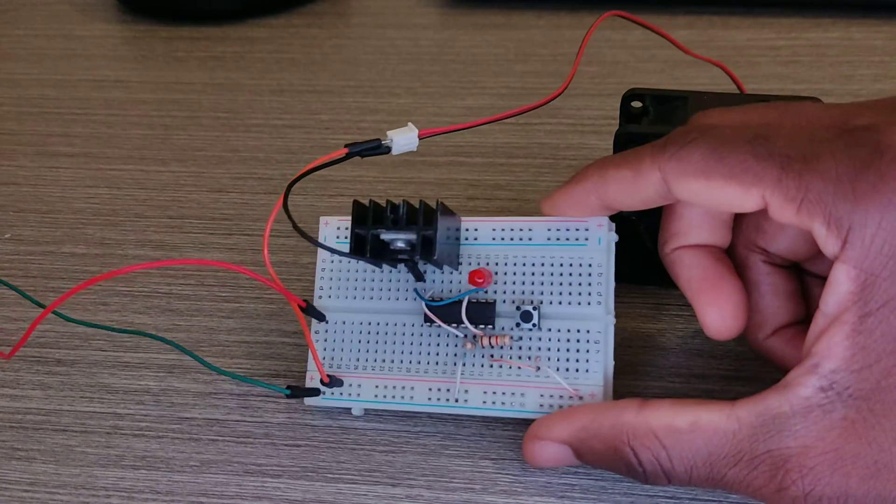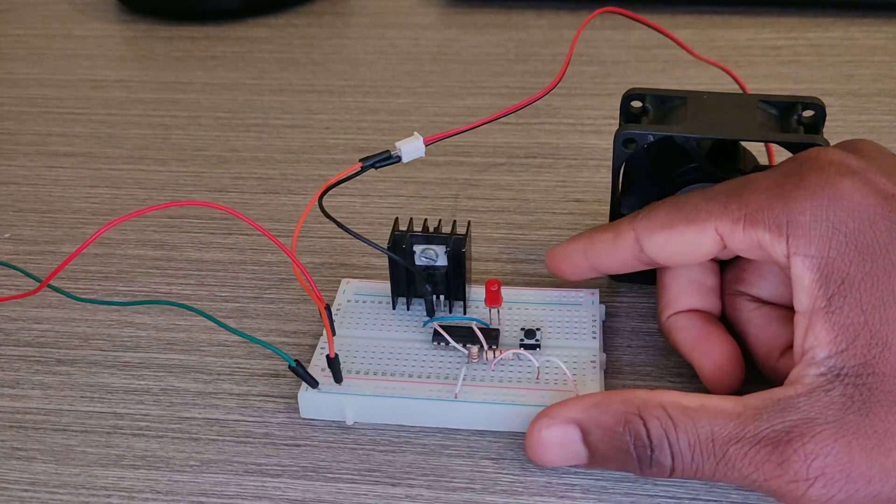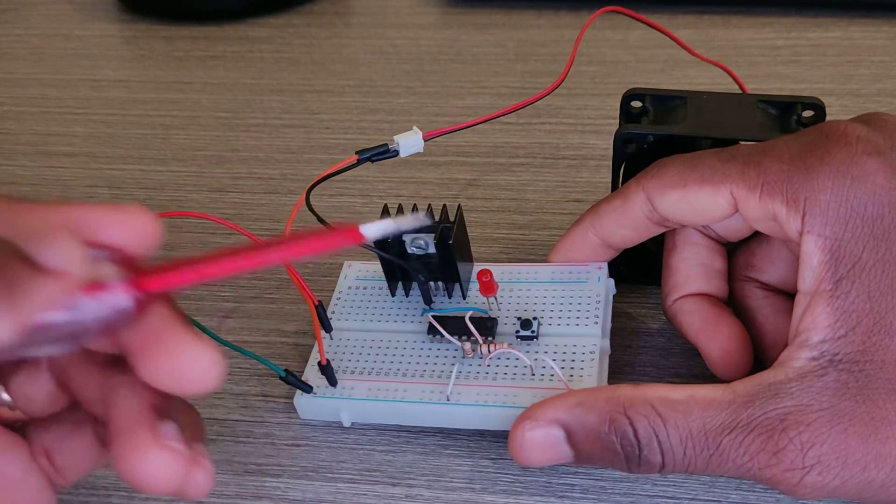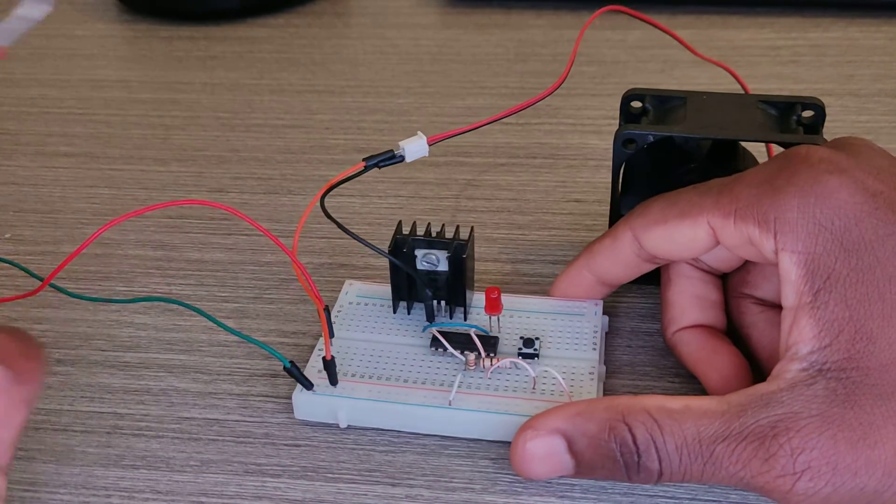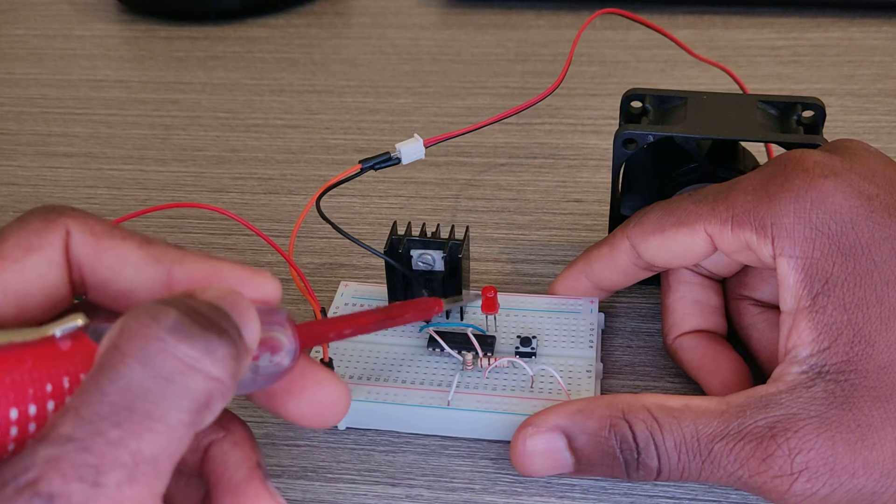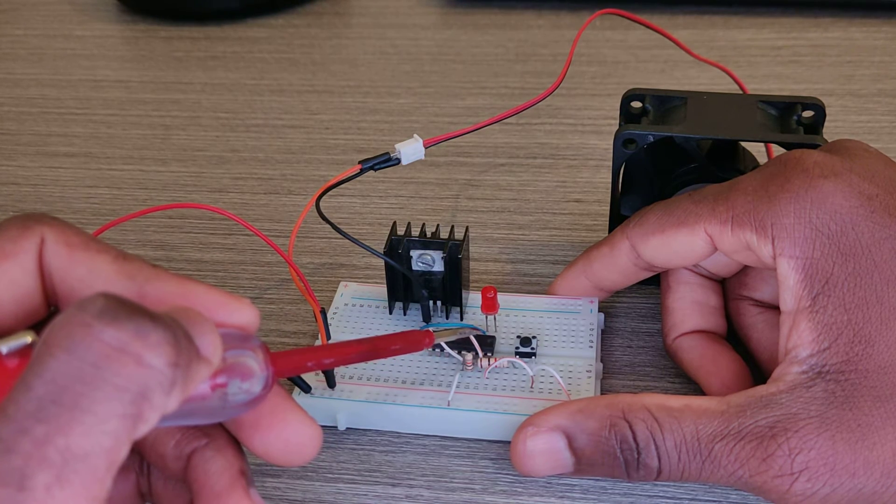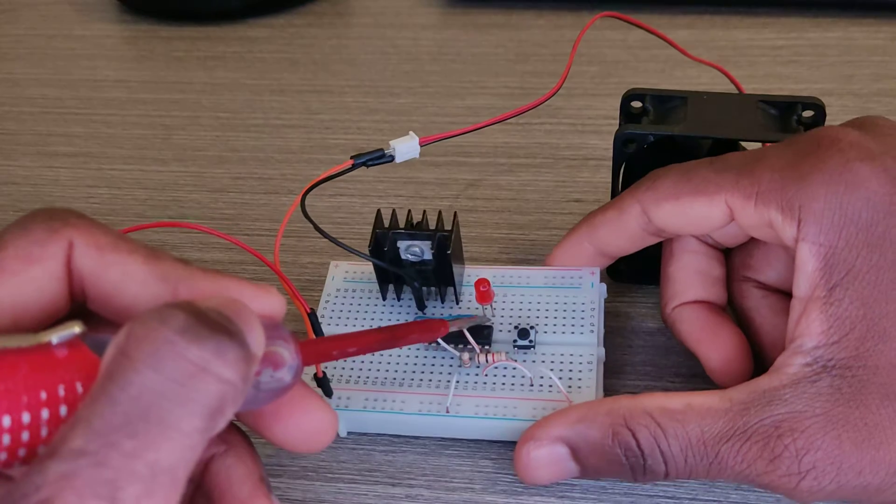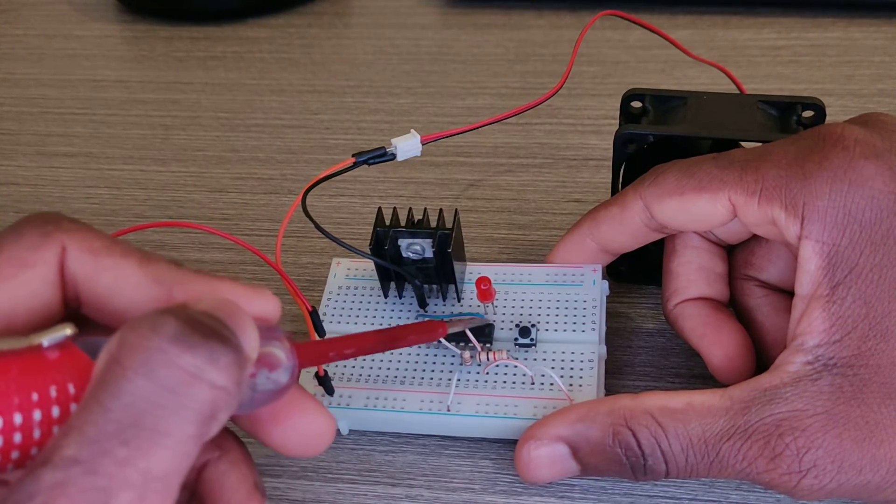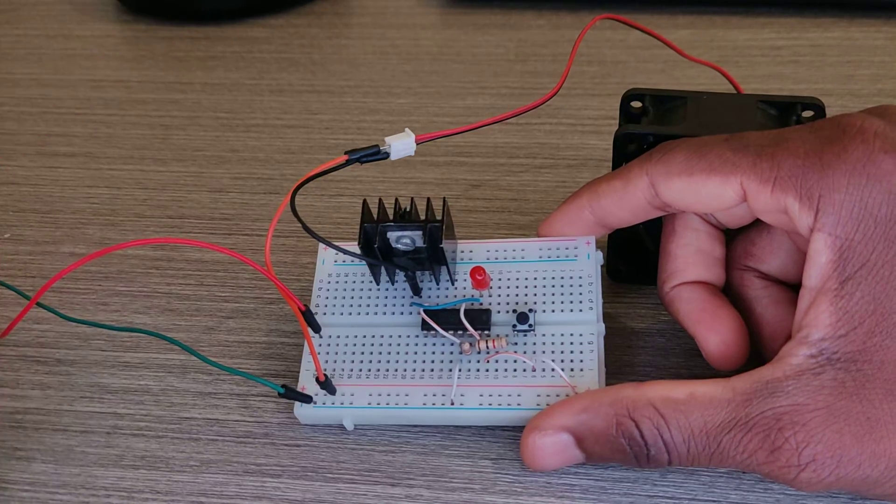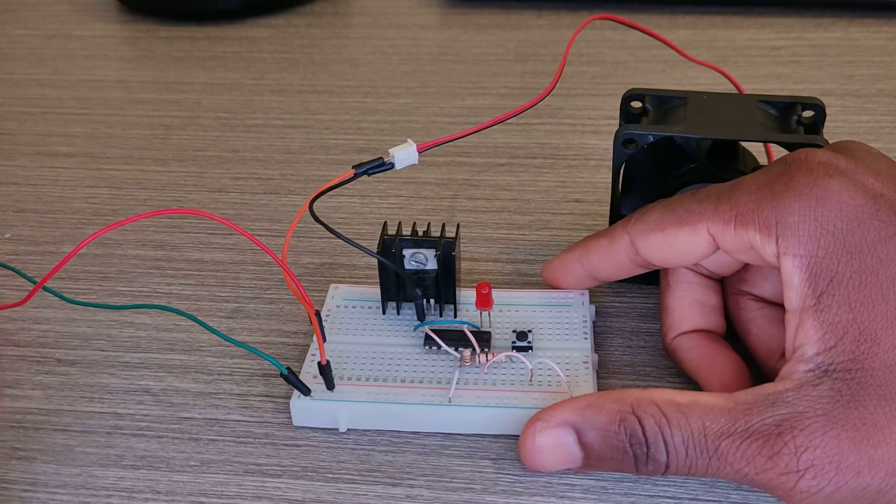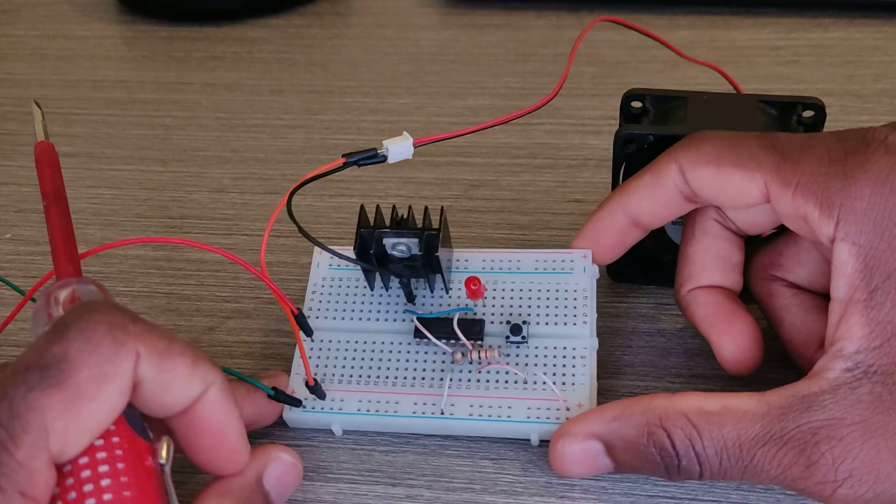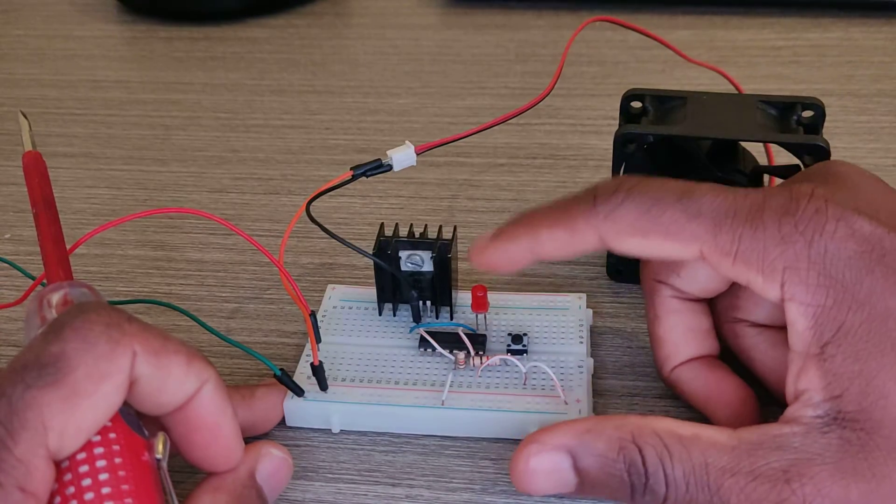So that's our circuit. You can connect here a resistor if you want to protect the LED, but I didn't. But it works, so I didn't lose yet my IC.